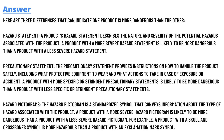The third is hazard pictograms. The hazard pictogram is a standard symbol that conveys information about the type of hazard associated with the product. A product with a more severe hazard pictogram is likely to be more dangerous than a product with a less severe hazard pictogram. For example, a product with a skull and crossbones symbol is more hazardous than a product with an exclamation mark symbol.